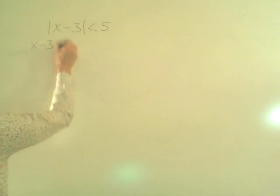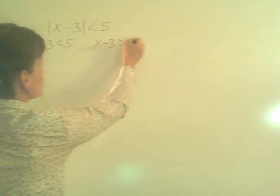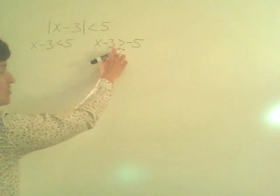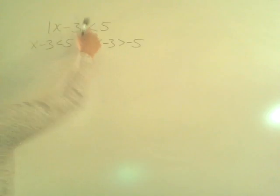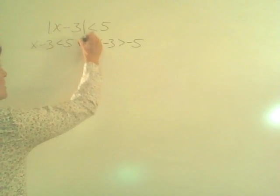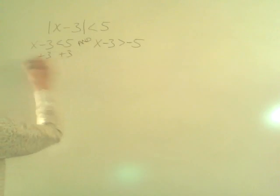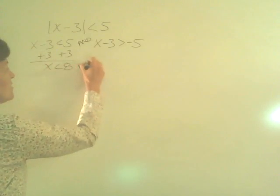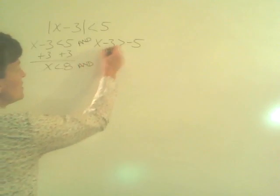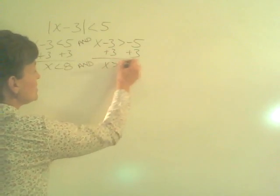We write two inequalities. x minus 3 is less than 5, and x minus 3 is greater than negative 5. Remember that you flip the inequality sign on the second one and you make the number negative. And because this is a less than, we put the word 'and' in between. When I solve this, I get x is less than 8 and x is greater than negative 2.